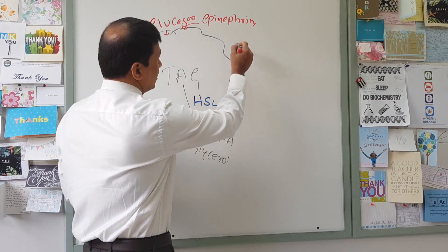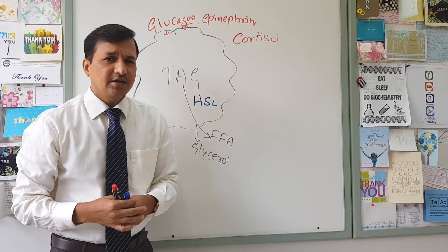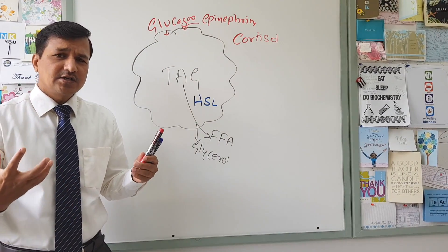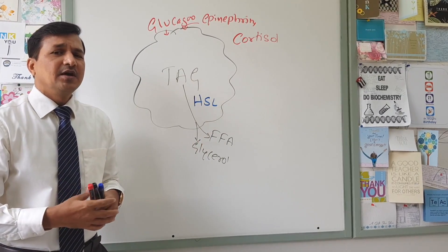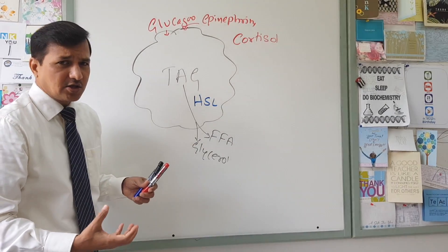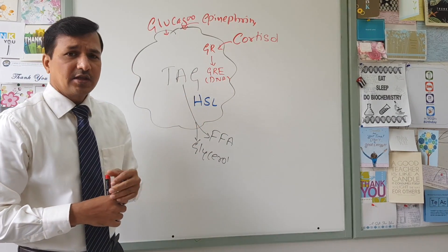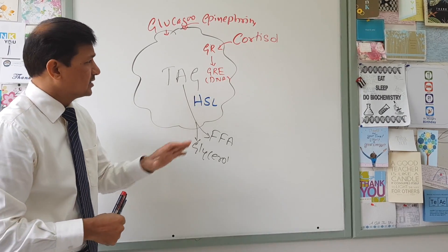Now let's look at the effect of cortisol on triacylglycerol breakdown. The mechanism of cortisol is a little different compared to glucagon and epinephrine. Cortisol is a steroid hormone, so it enters the cytoplasm and binds to cytoplasmic or nuclear receptors. Cortisol binds to the glucocorticoid receptor inside the cytoplasm, and that glucocorticoid receptor goes and binds to glucocorticoid response elements — gene segments present in the DNA.